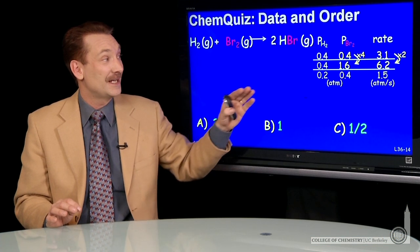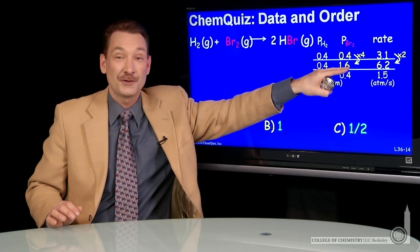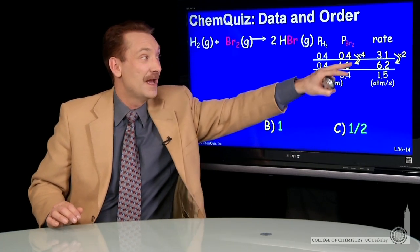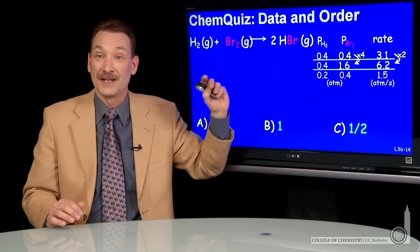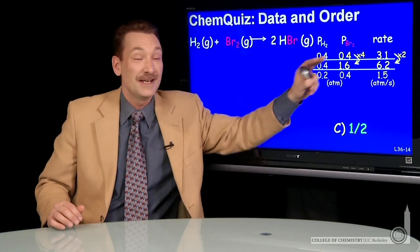the rate changes by a factor of 2. So here I have some concrete data in terms of the concentration of bromine affecting the rate. When I quadruple the concentration of bromine, holding everything else constant, the rate doubles.